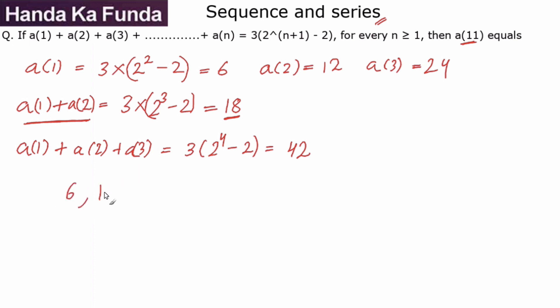Now what is the pattern? It's getting multiplied by 2. So the next one will be 48, 96, and so on. If you notice these terms, what are these terms? This is 3 into 2, 3 into 2 square, 3 into 2 cube, and so on.